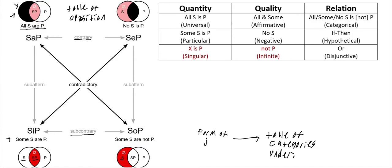In Kant's forms of judgment, the first part is quantity, which looks at whether all or some S is P — how much of S is P. I have the singular part slightly set apart because in Aristotelian logic the singular can be subsumed into the universal.